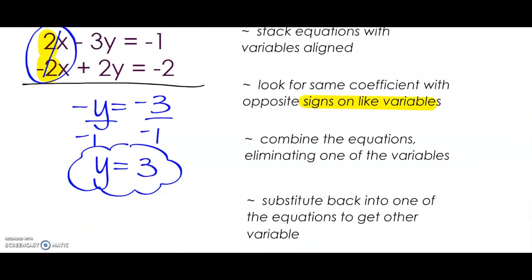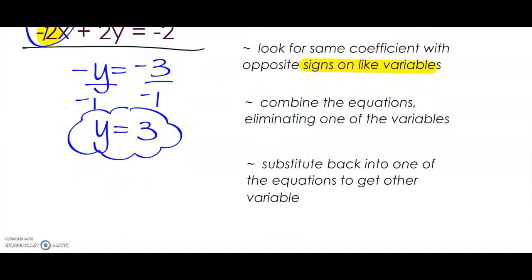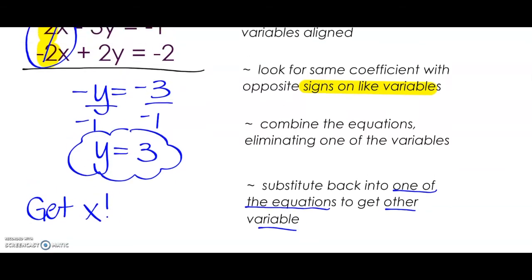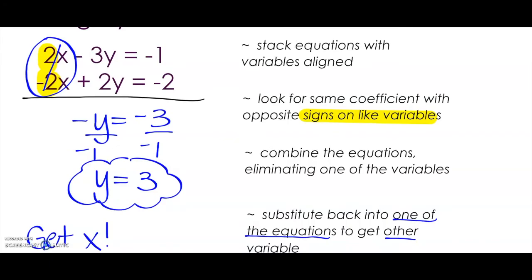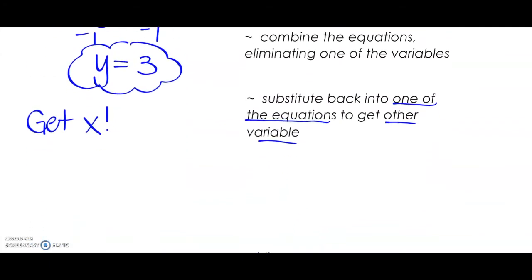Now, we're going to go to our next step. We are going to substitute back into one of the equations to get the other variable. We need to get X. So we are going to use one of the two equations — I'm going to use the top equation: 2X minus 3Y equals negative 1.